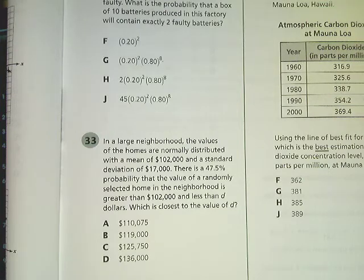This is question number 33 on the Algebra 2 practice test. The question says, in a large neighborhood, the values of homes are normally distributed with a mean of $102,000 and a standard deviation of $17,000.